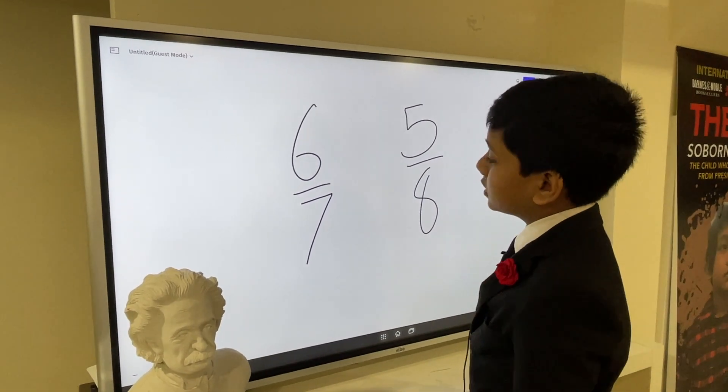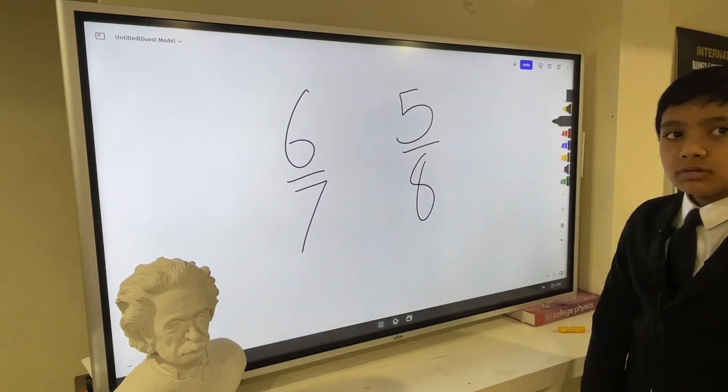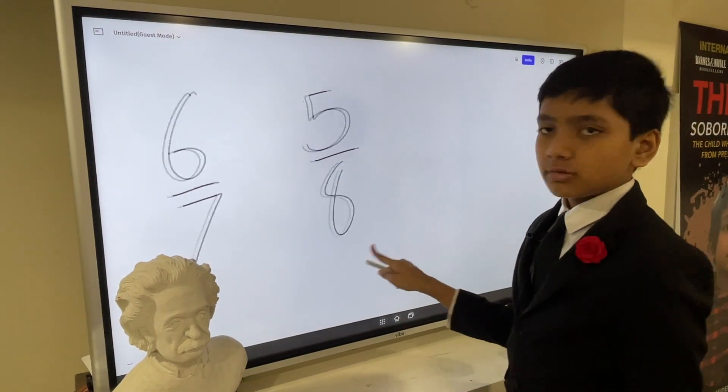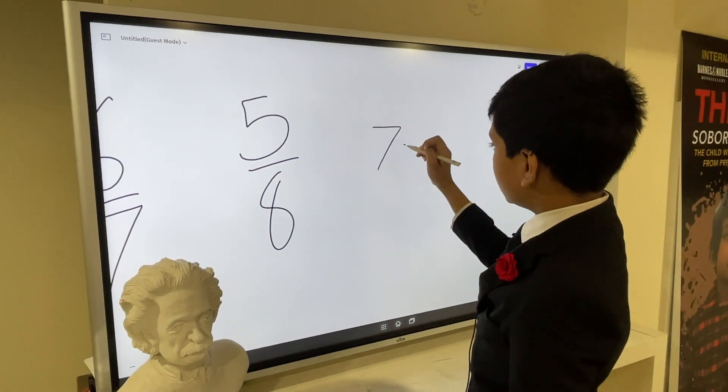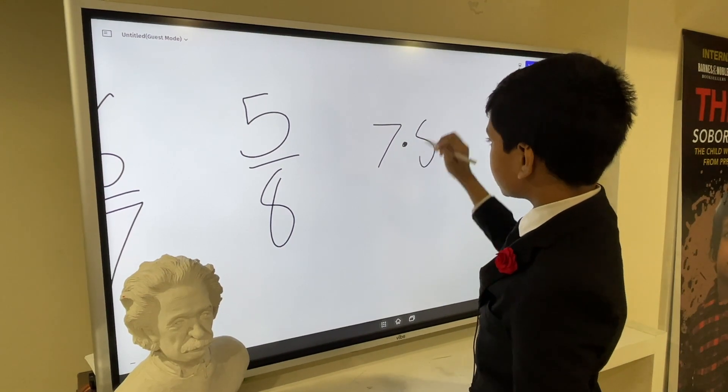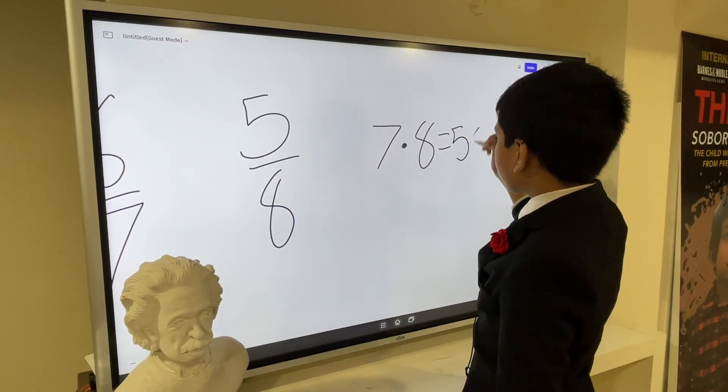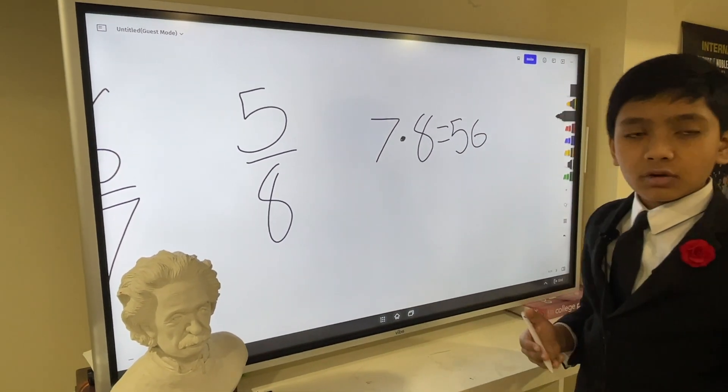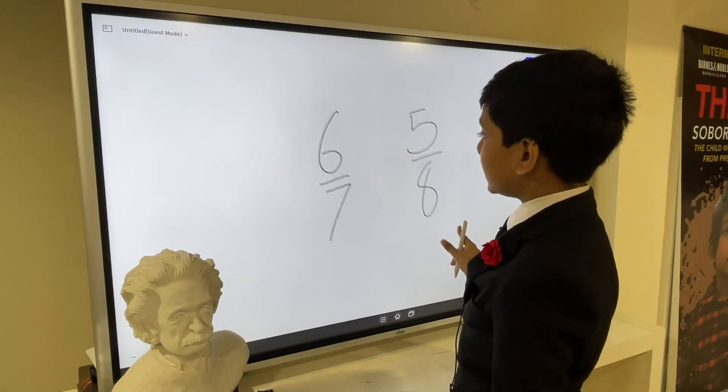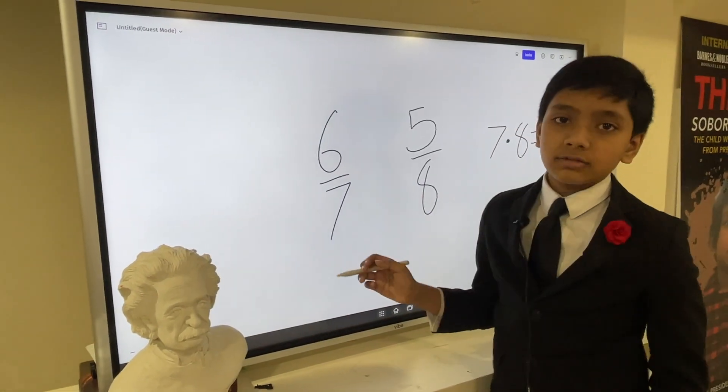We can do this the easy way, which is just multiplying them. Seven times eight is 56. It turns out this works conveniently in our favor because 56 is the least common multiple of seven and eight.